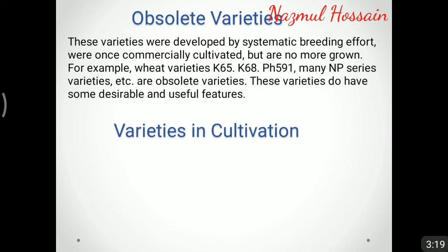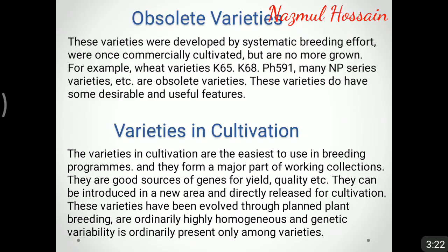Varieties in cultivation are the easiest to use in breeding programs and they form a major part of working collections. They are good sources of genes for yield and quality. They can be introduced in a new area and directly released for cultivation. These varieties have been evolved through plant breeding, are ordinarily highly homogeneous, and genetic variability is ordinarily present only among varieties.